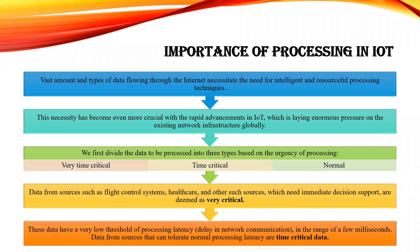Because of rapid advancement, enormous pressure is on the existing network. Based on that, processing is divided into three types: very time critical, time critical, and normal. When it is very critical, data from a flight control system or healthcare systems need immediate input/output response. These are called very time critical. Such data will have a very low threshold of processing latency — in the range of small milliseconds.